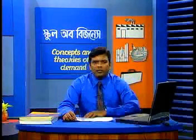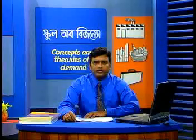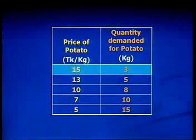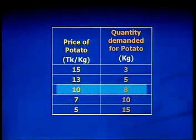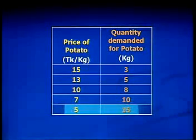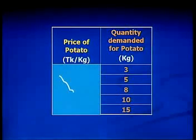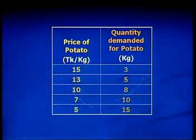Now if we use numerical numbers to depict the relationship between price of the commodity and the quantity demanded, we will find the demand schedule. We can see when the price of potato is 15, the quantity demanded is 3 kilo; when the price is 13, the quantity demanded is 5; when the price is 10, the quantity demanded is 8 kilo; when the price is 7, the quantity demanded is 10; and when the price is 5, the quantity demanded is 15. So we can see that when the price of potato decreases, the quantity demanded is increasing. This is called a demand schedule.